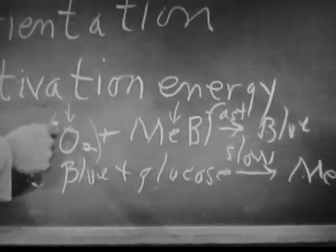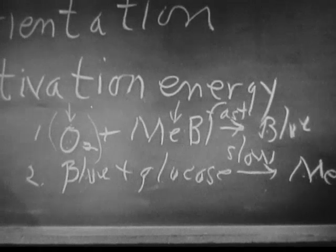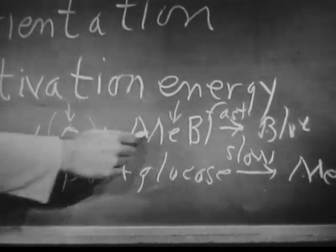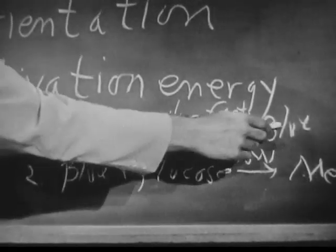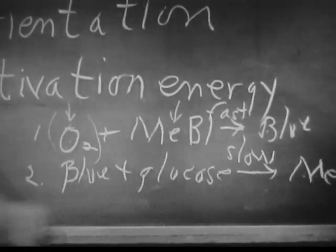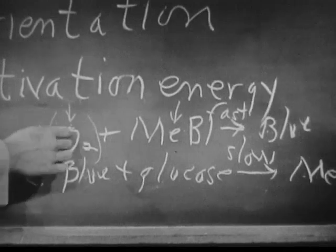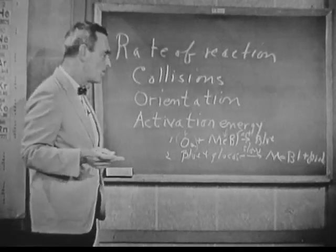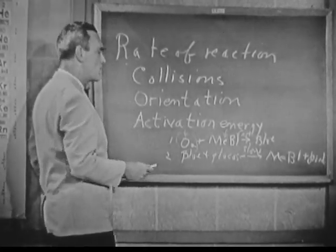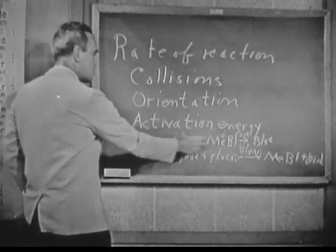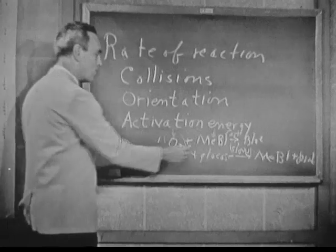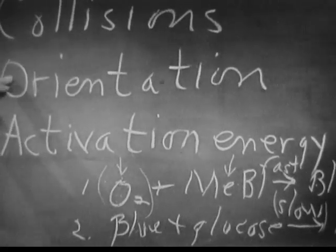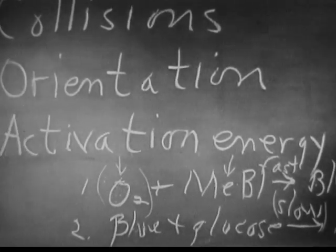If you dissolve one unit of oxygen, it takes 10 seconds for the reaction to occur, because the slow step determines it. If we dissolve twice as much oxygen, since methylene blue is a limiting reagent, we produce the same concentration of blue material. Therefore this reaction proceeds at the same rate — the same slow rate — and it takes twice as long to remove the oxygen. Here we have an example which is very typical of chemical reactions: the overall rate is determined by the slowest step. The slow step can occur only when the molecules collide with the proper orientation and when they collide with sufficient activation energy.